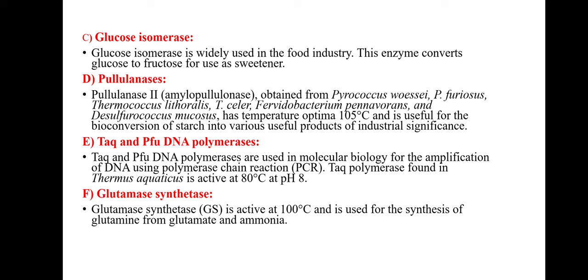The next enzyme is pullulanase. Amylopullulanase obtained from Pyrococcus woesei, Pyrococcus furiosus, Thermococcus litoralis, and many other bacteria has a temperature optimum of 105°C and is useful for the bioconversion of starch into various products of industrial significance.